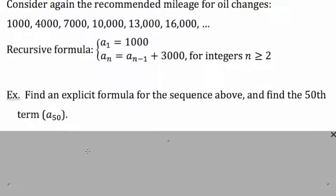So let's take a look at an example where we will find an explicit formula for the oil change mileage sequence above. We will use that explicit formula to find the 50th term in the sequence, which is denoted a sub 50.